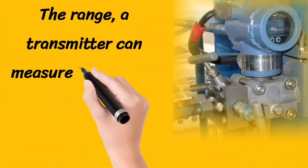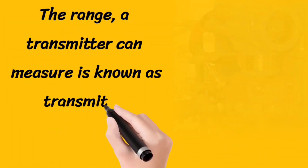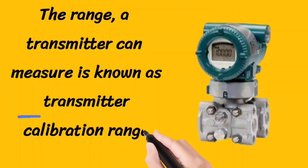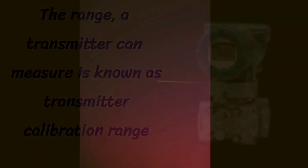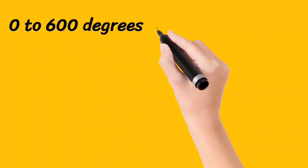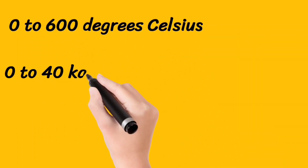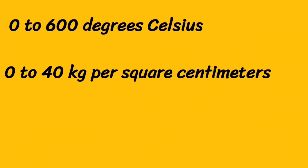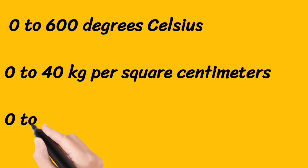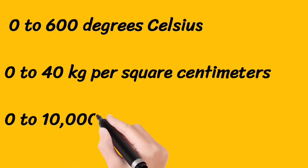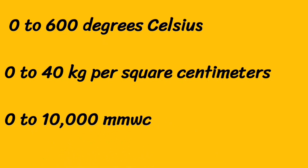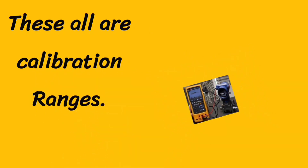The range a transmitter can measure is known as transmitter calibration range. For example, 0 to 600 degrees Celsius, 0 to 40 kilograms per square centimetre, 0 to 10,000 mm WC — these all are calibration ranges.